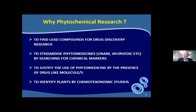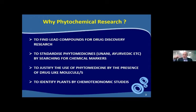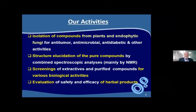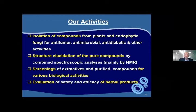For example, if you work on some plants and find a compound close to what is called cardiac glycosides, then we can predict that this plant may be used for cardiac purposes. The fourth goal is to identify plants through chemotaxonomic study, which is familiar to people working in botany. Chemistry sometimes helps to identify plants, since some plants may contain only alkaloids, some steroids, and so on. The steps include isolation of compounds from plants and endophytic fungi for anti-tumor, anti-microbial, and anti-diabetic activities, structural elucidation of pure compounds — this is actually my main job — combined spectroscopic analysis, screening of purified compounds for various biological activities, and evaluation of safety and efficacy of herbal drugs.